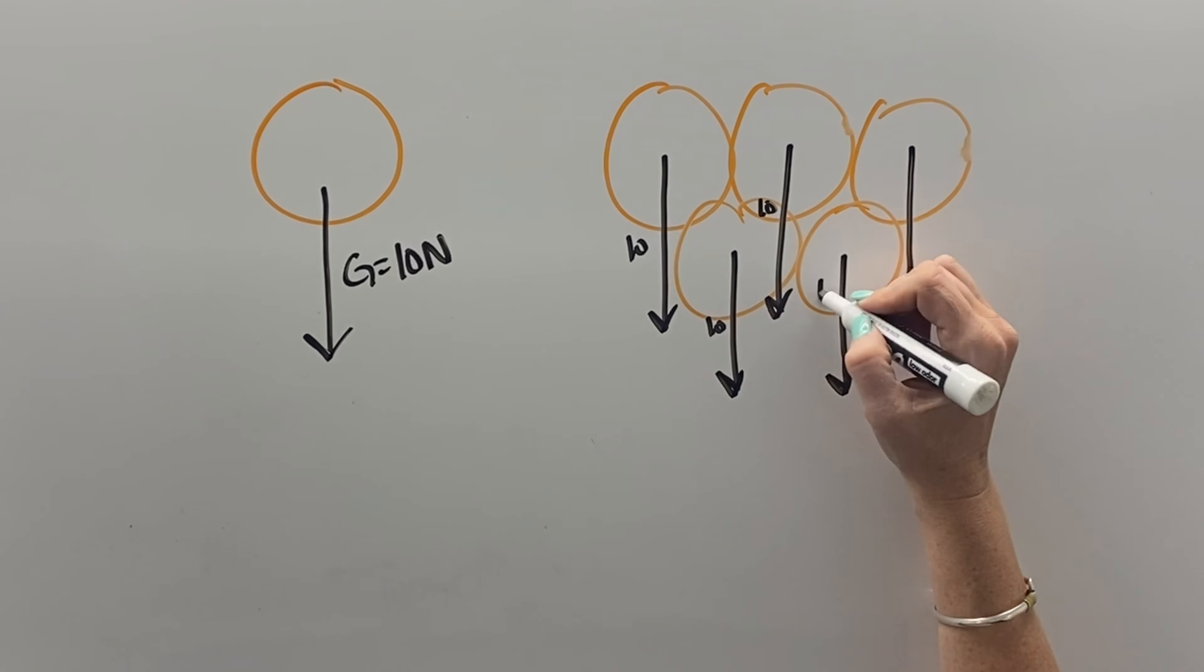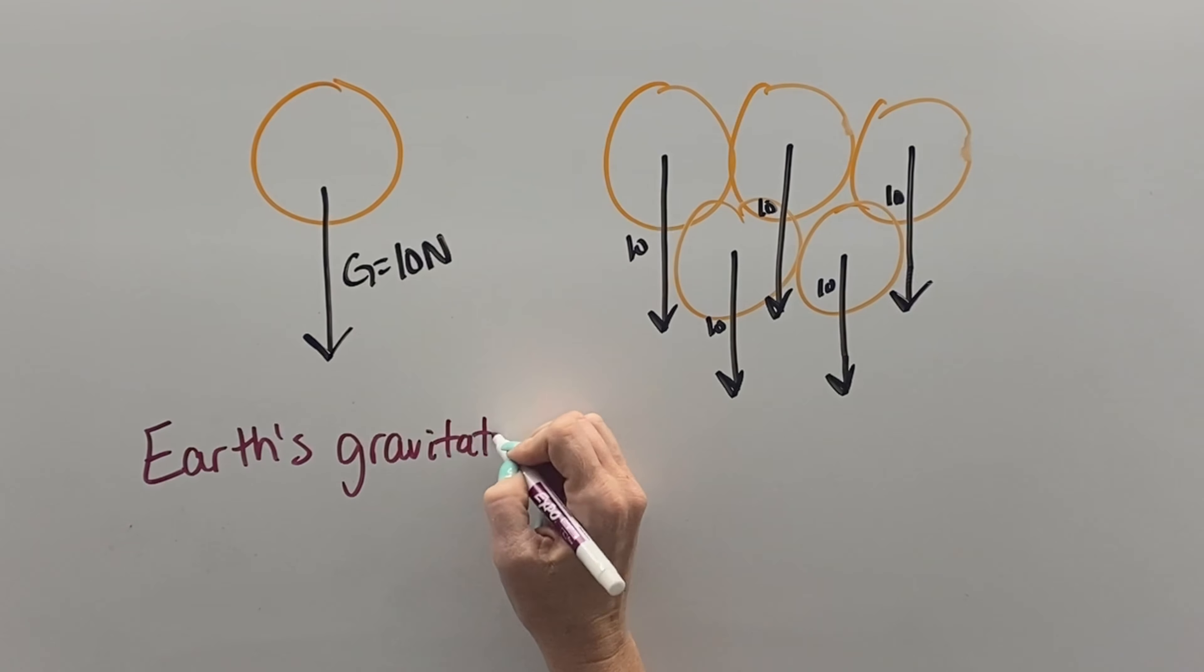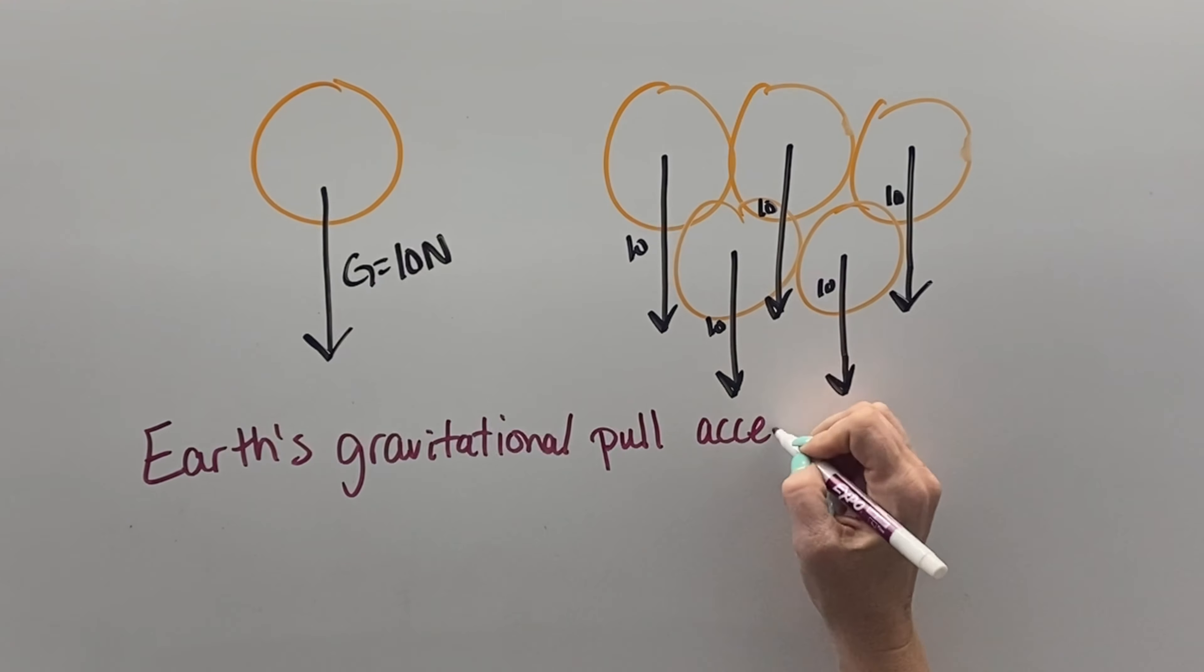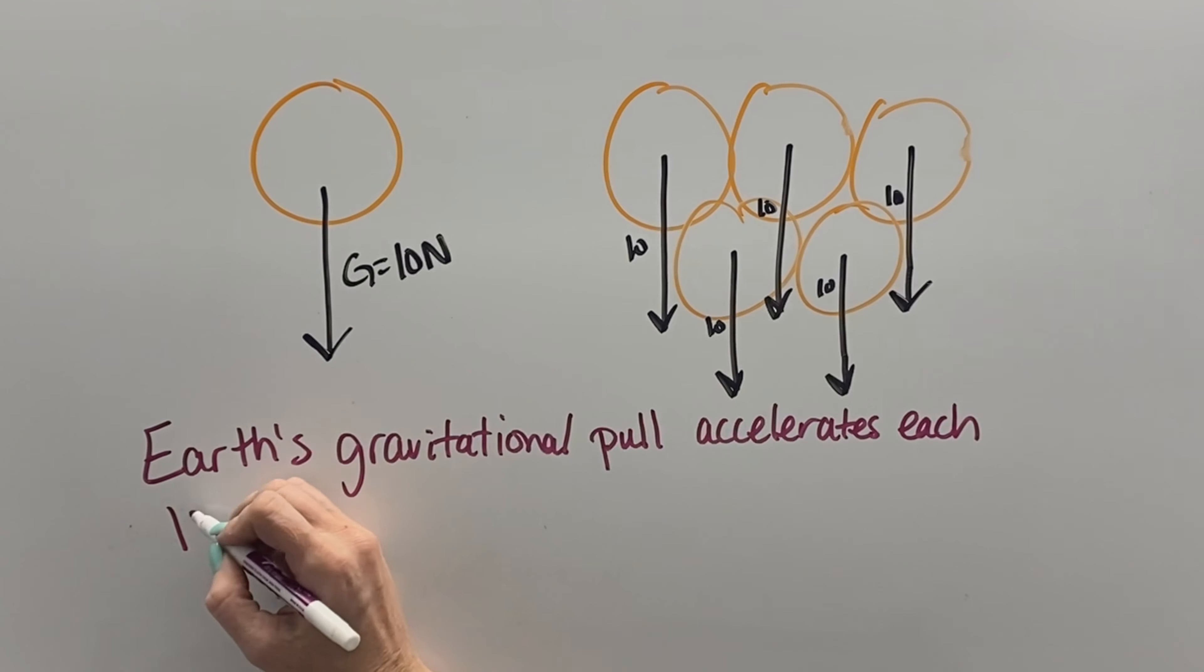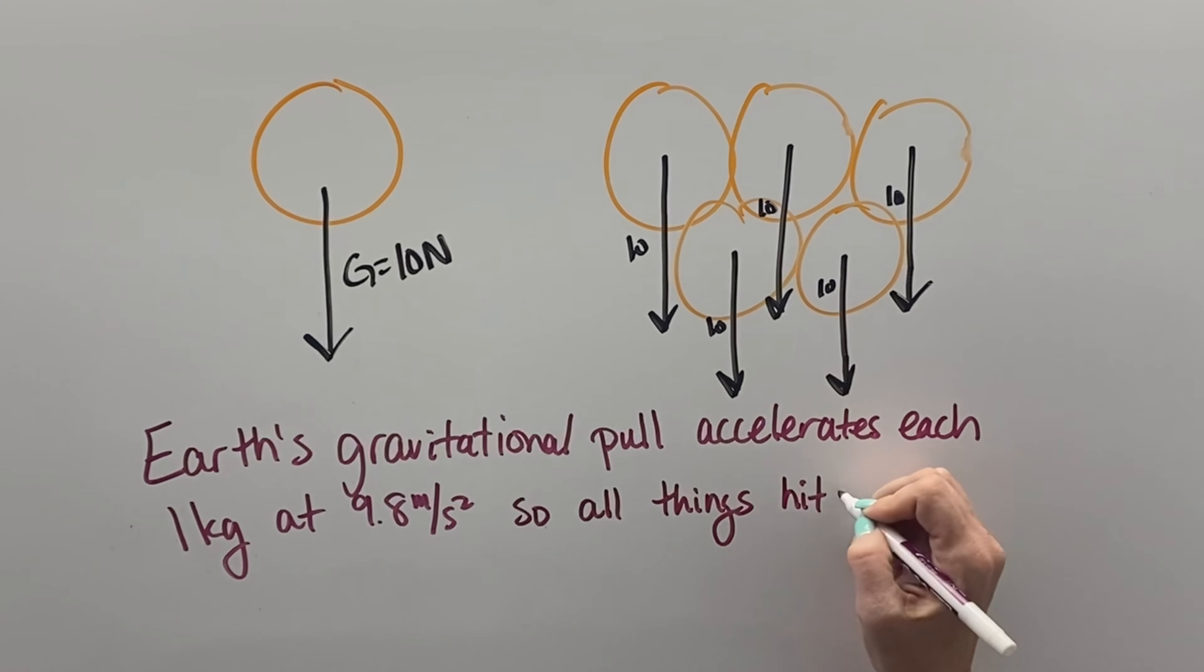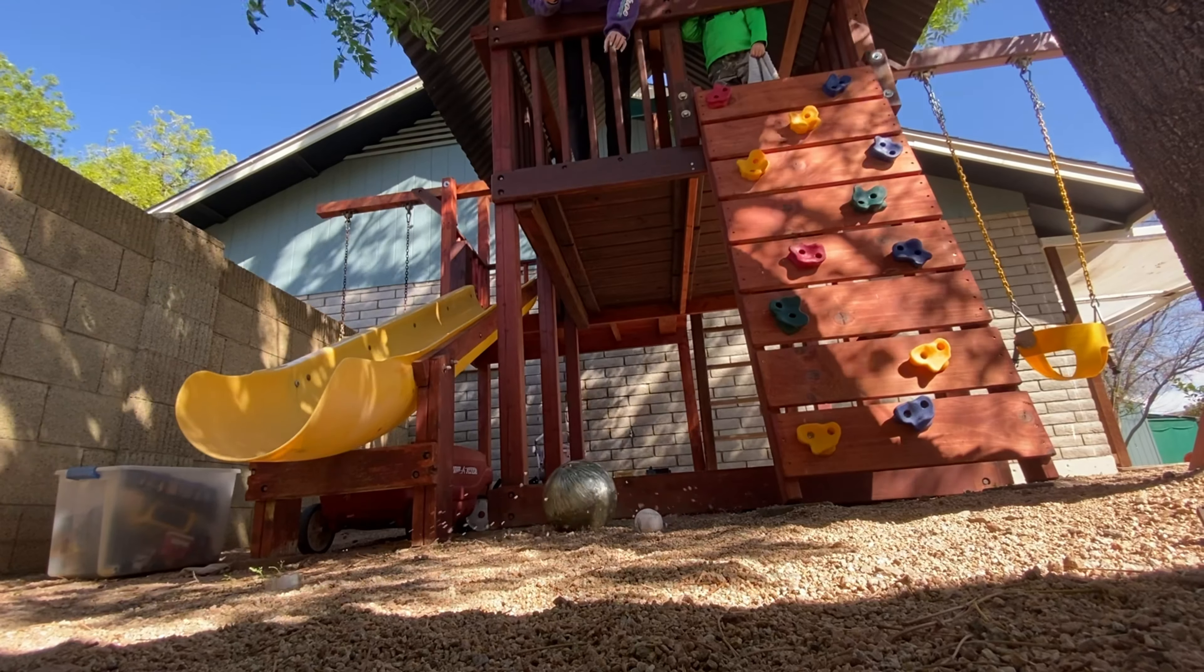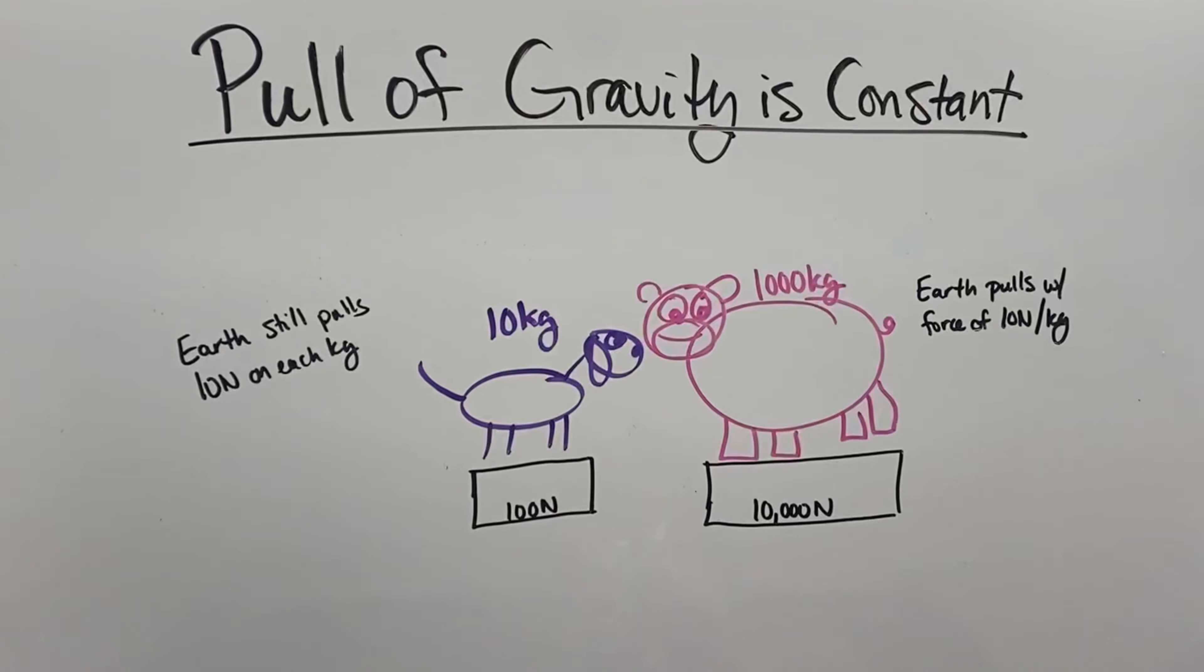Whereas the single orange is being pulled with 10 newtons of force, the bag of oranges is being pulled down with 50 newtons of force. So literally, the Earth's gravitational pull will accelerate each one kilogram at 9.8 meters per second squared by pulling on it with 9.8 newtons, so everything hits the ground at the same time. And it happens even with a bowling ball and a baseball.